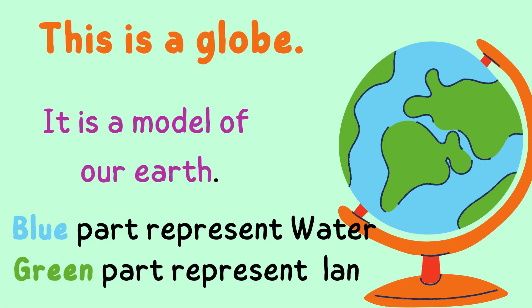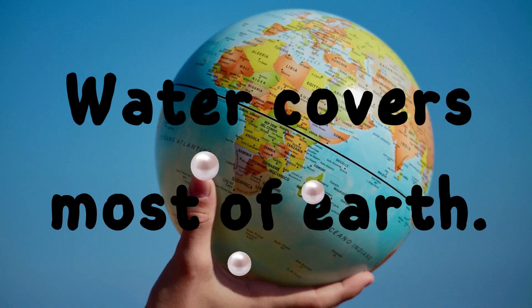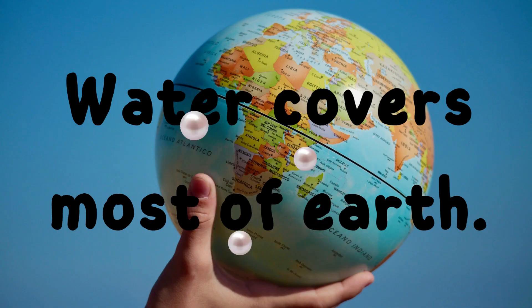This is a globe. It is the model of our Earth. The blue part represents water and the green part represents land. Water covers most of our Earth.